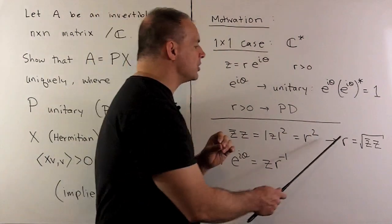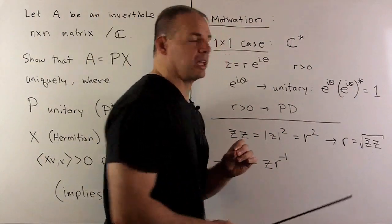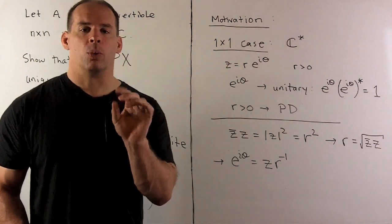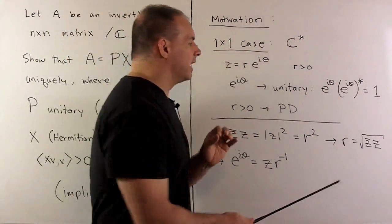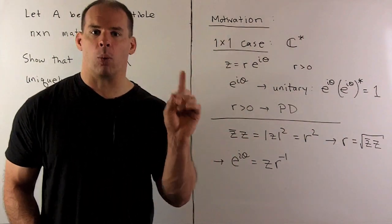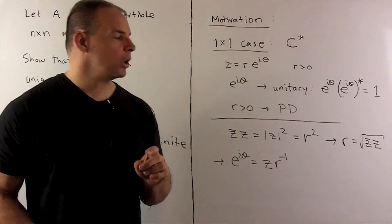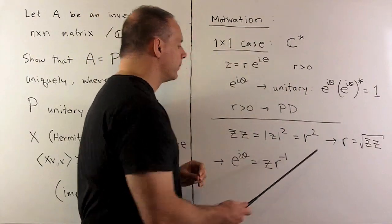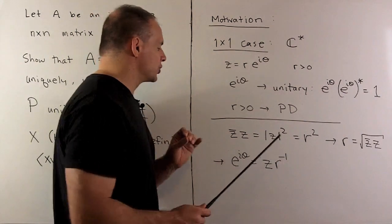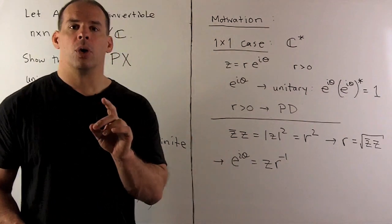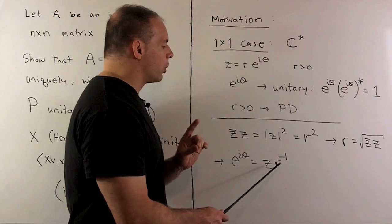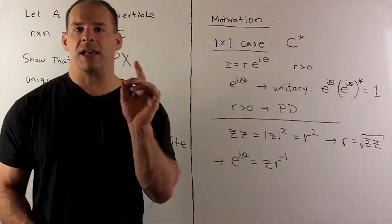So if we want r, we just take the square root of z-bar times z. Thinking in terms of matrices, we're going to take A-star times A and then take the positive definite square root from part one. Once we have our r, we can find the unitary part by multiplying z times r inverse. So we find the square root of A-star times A, then multiply A on the right by the inverse of that square root.